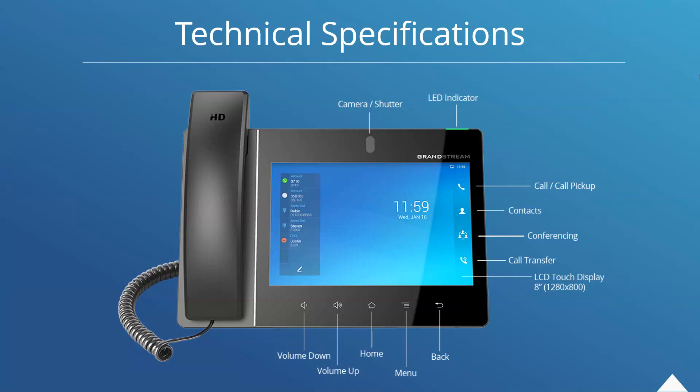Taking a quick look at the device, we have the camera shutter at the top and an LED indicator. On the interactive display, we have call/pickup, contacts, conferencing, and call transfer — all easily and intuitively placed on the right side of the LCD touch display — with our SIP accounts on the left, really pushing an easy user interface. We also have hard-key buttons for volume, home, menu, and back.